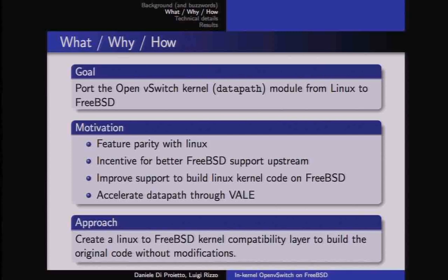The data path has two parts: one makes the forwarding decision using the hash table — parsing packet fields to determine the output interface — and the other is the forwarding plane itself, moving packets fast from one port to another. We have the Vale switch, which uses NetMap, is already part of FreeBSD, and is extremely fast and flexible.